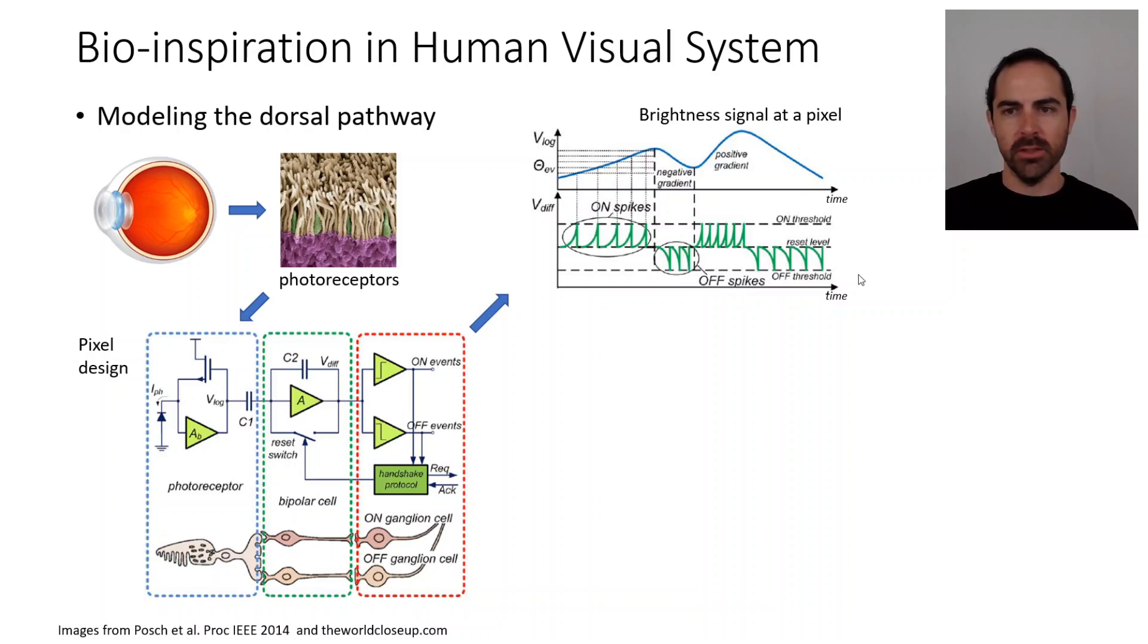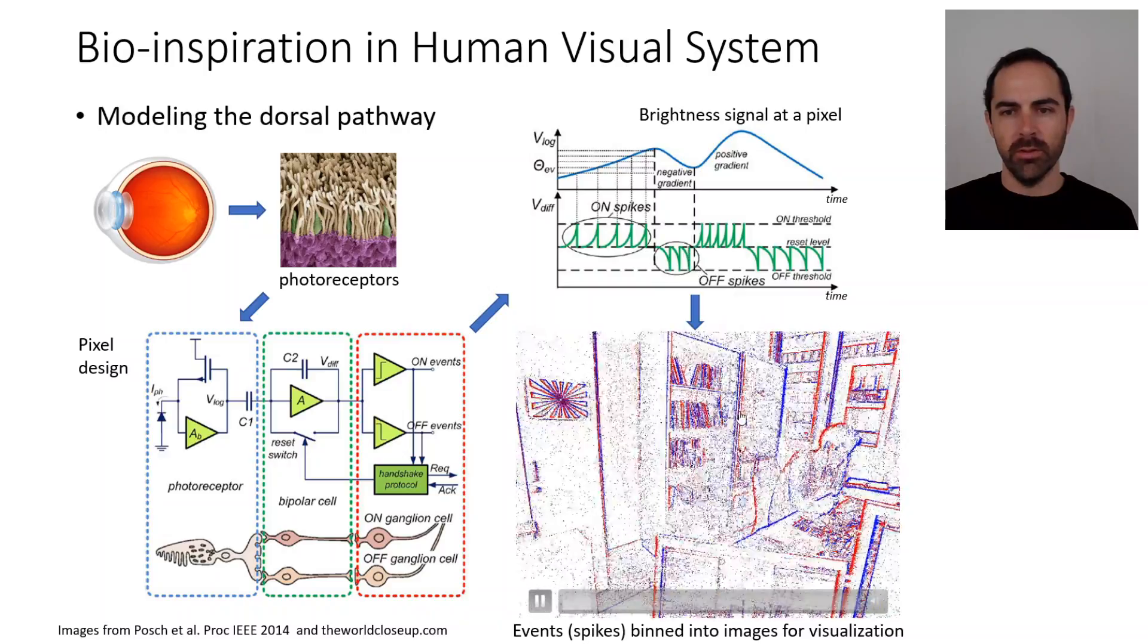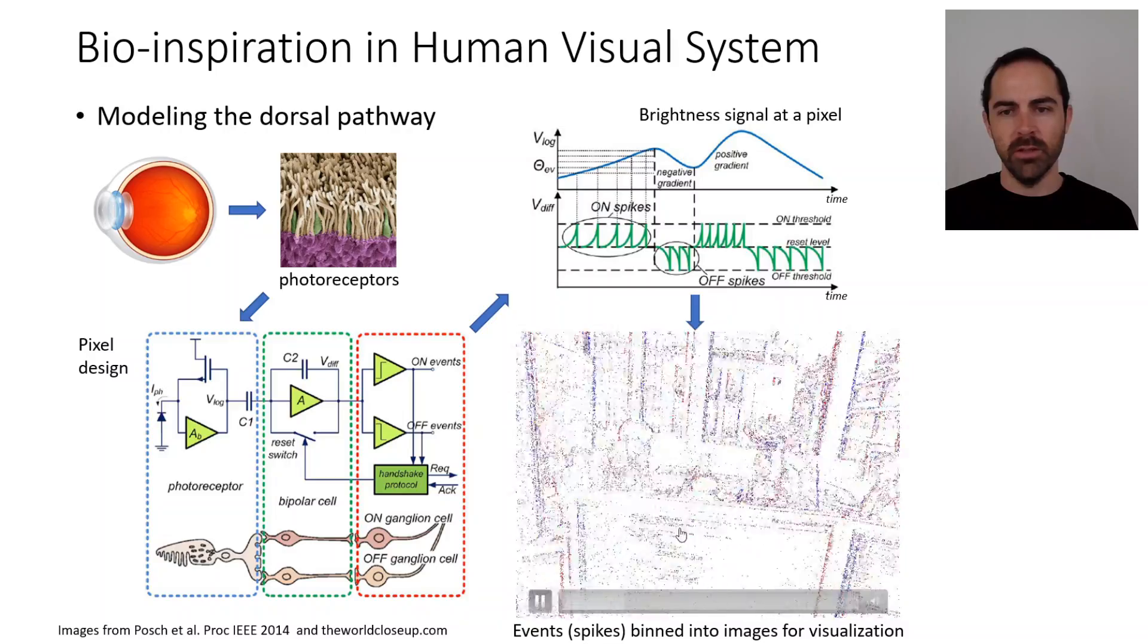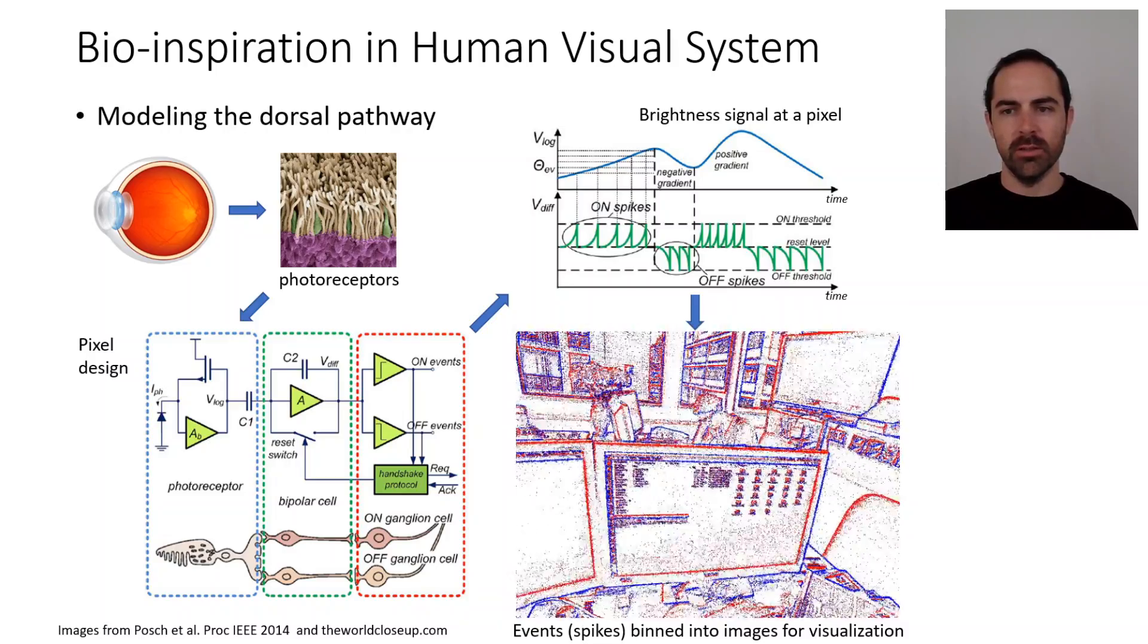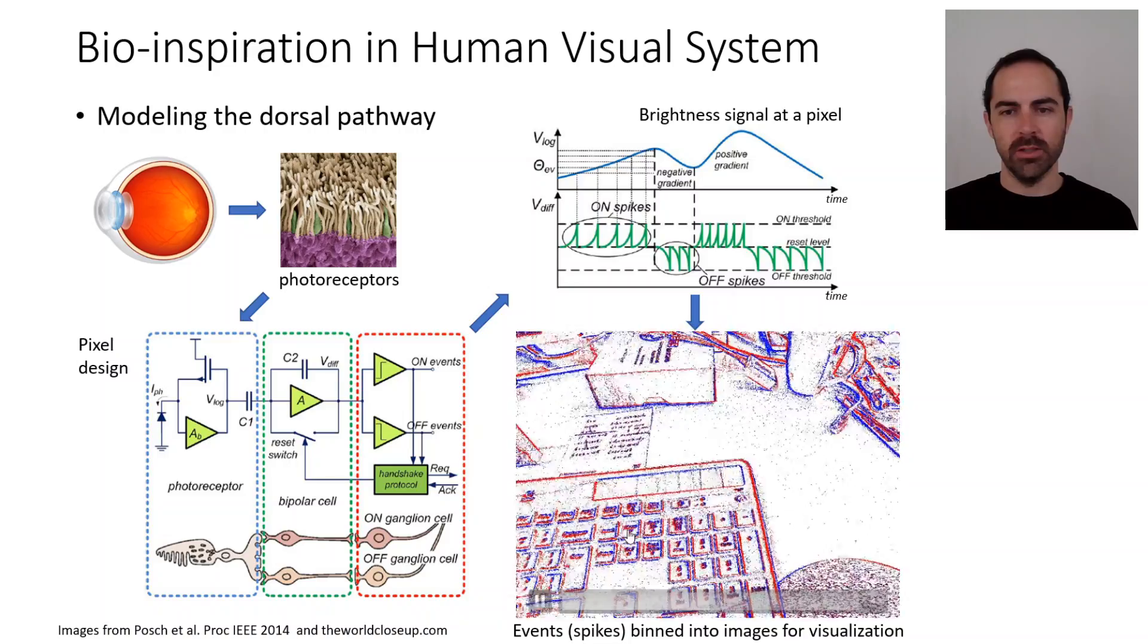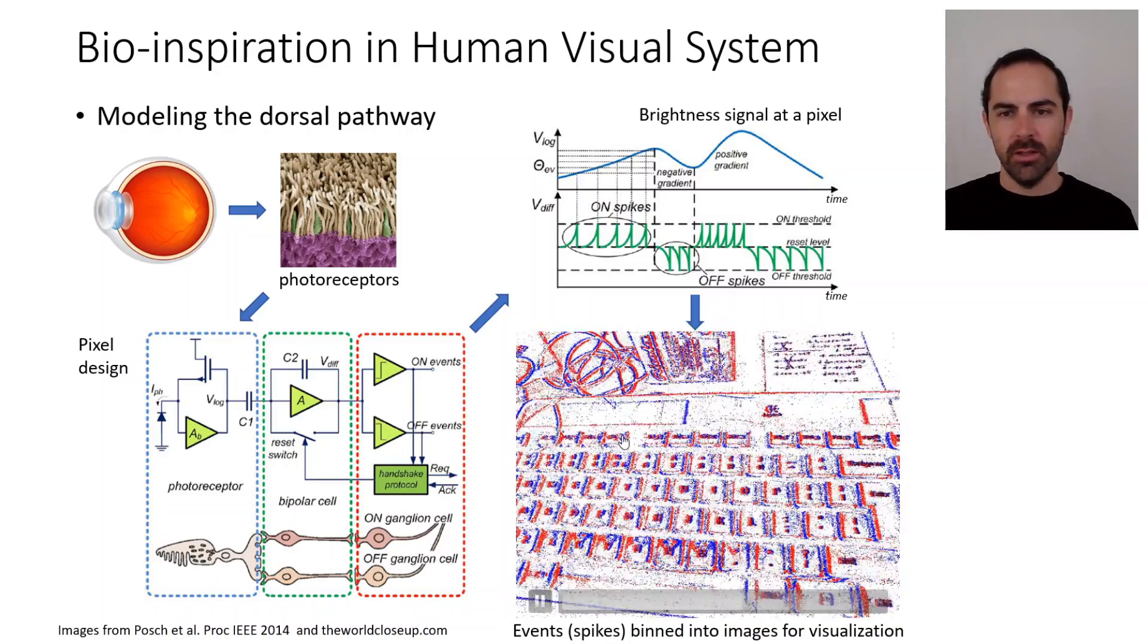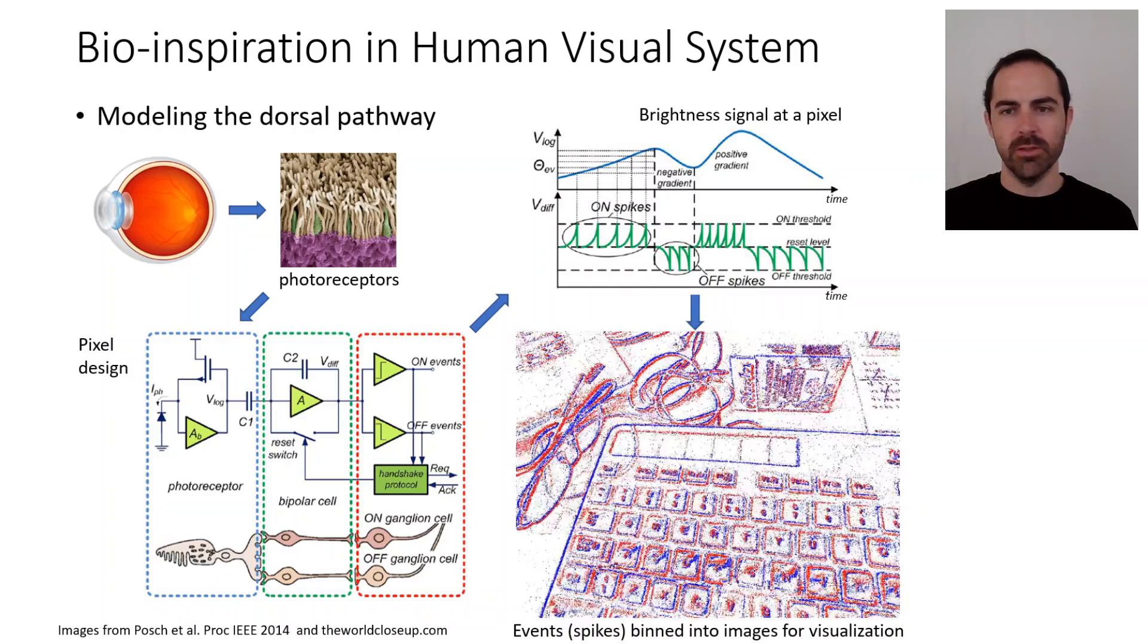This is what happens for a single pixel. If we now represent what happens in the whole image plane and we color them, the on with blue and the off with red, and we bin them for visualization, this is what we get. The events are mostly triggered at the edges of the objects. In this case we see that the camera is moving and events are triggered everywhere and caused by moving objects in the scene.